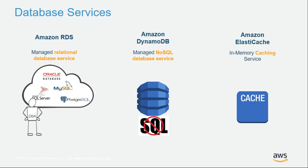We also have database services. You can run databases on plain virtual machines yourself, or use Amazon RDS — a managed relational database service offering six engines: Oracle, MySQL, Postgres, SQL Server, and MariaDB. We also have Amazon DynamoDB, a managed NoSQL database service, and Amazon ElastiCache, an in-memory caching service.